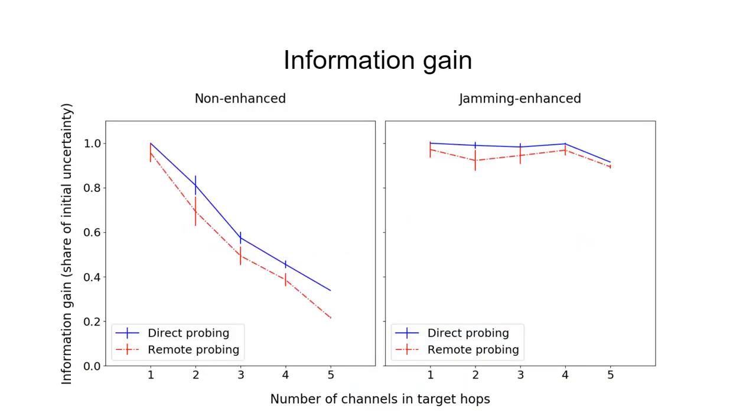In terms of information gain, we confirm our intuition that jamming actually helps probe more efficiently. On the left picture, we see that without the jamming, as we increase the number of channels in the target hops, the efficiency of probing, or rather the ultimate information gain, decreases.